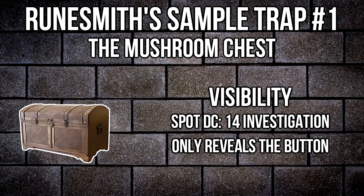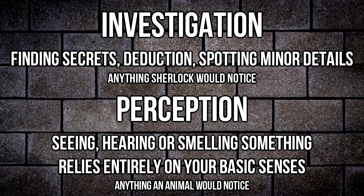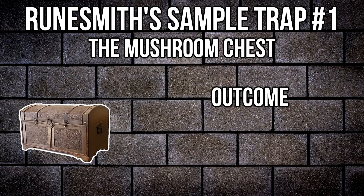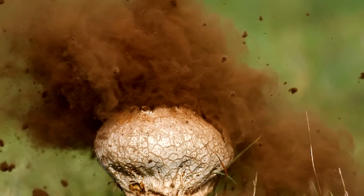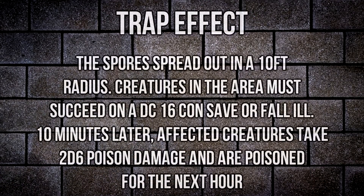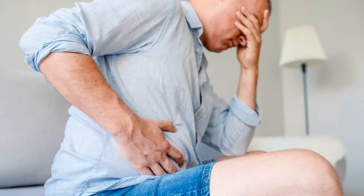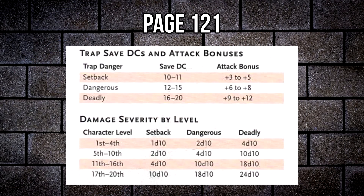Never reveal your secrets. Keep them guessing. Keep them afraid. Also note that I said investigation, not perception — that shit's pressed up against a wall. Lastly is the result: the mechanical angle of the trap that deals the damage. As an airborne intestinal toxin, you breathe it in and it makes your tum-tum hurt a lot. The spores spread out to a 10-foot radius, and failing a DC Constitution save means they twist your guts. Ten minutes after the failed roll, targets will take 2d6 poison damage and are poisoned for the next hour. Violent diarrhea follows for roughly a week. The Dungeon Master's Guide has a great set of tables for shifting damage types and save DCs for traps, so you can tailor them to your party's level.